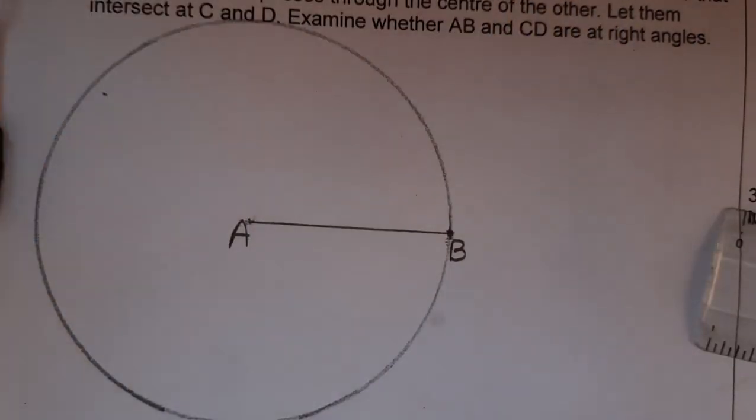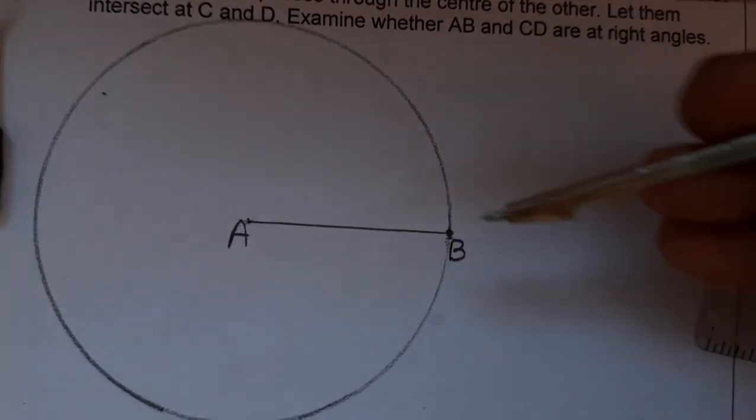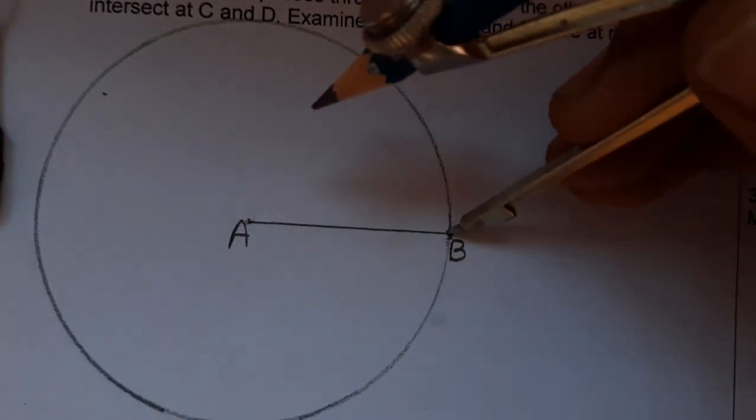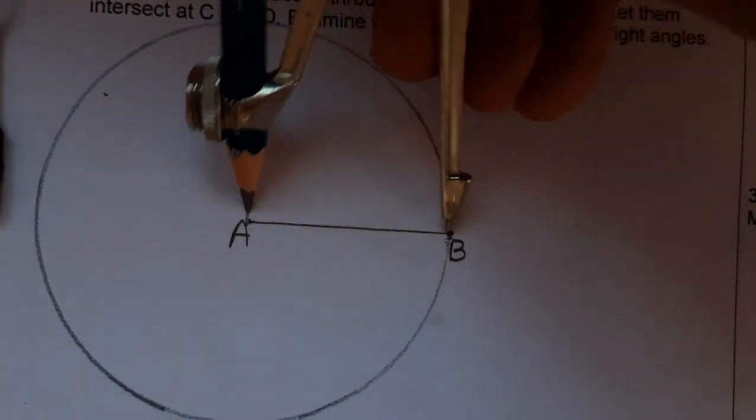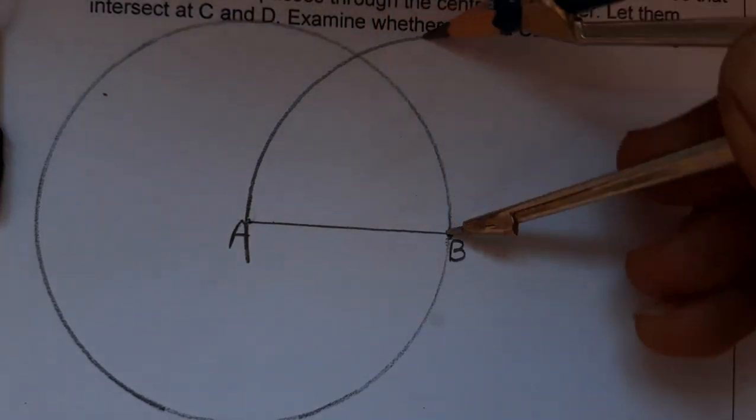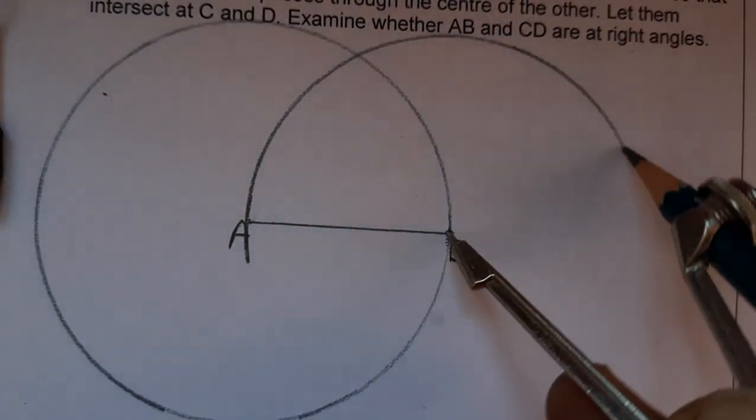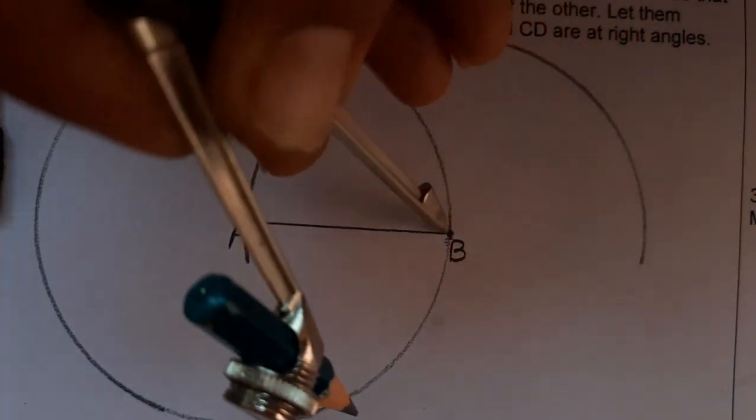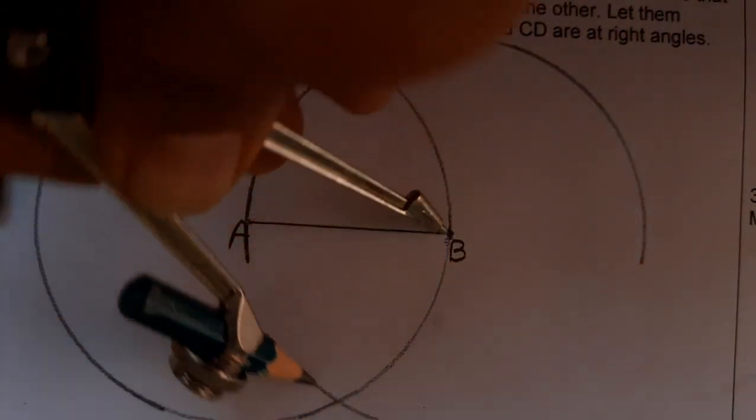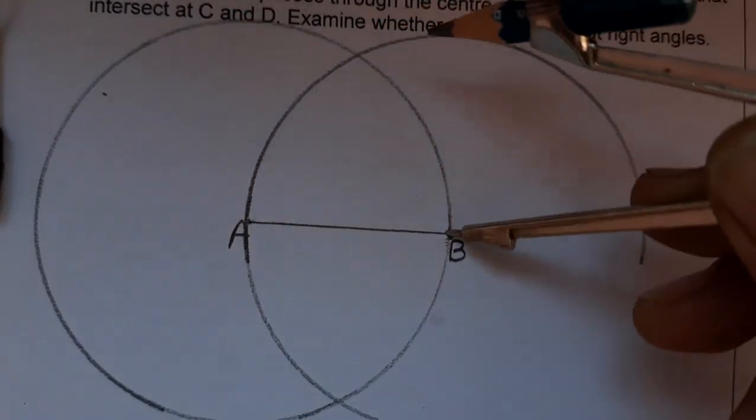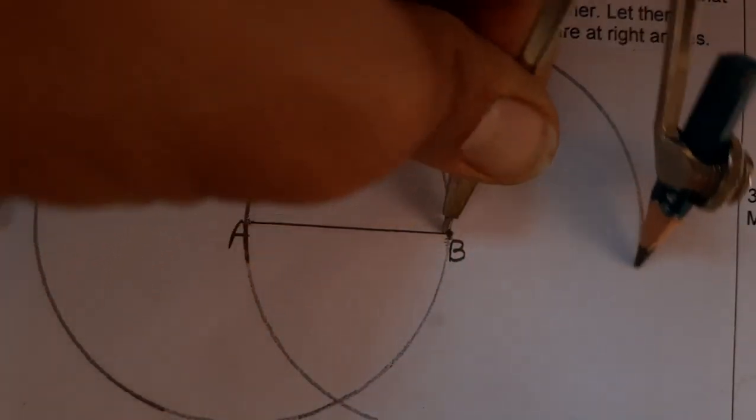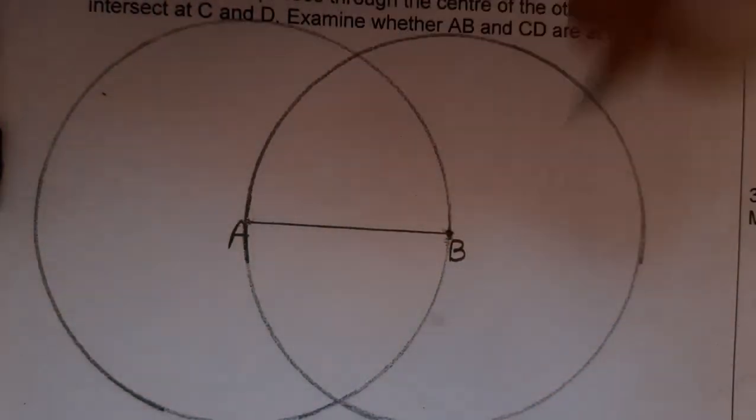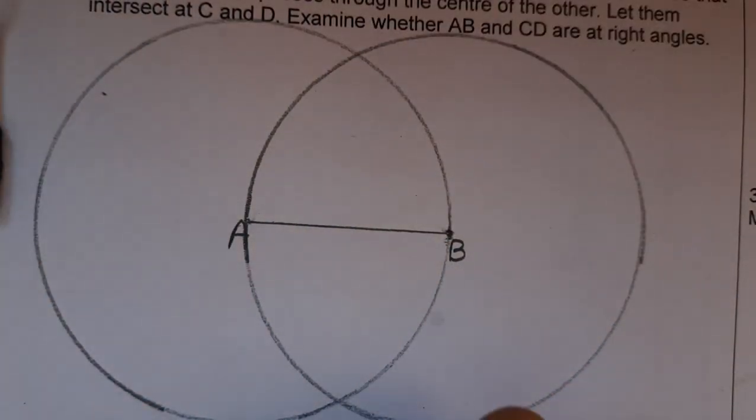We have made one circle. Now we take B as center. Earlier A was the center, now B is the center, and take this radius and draw another circle from here. We are making the second circle.